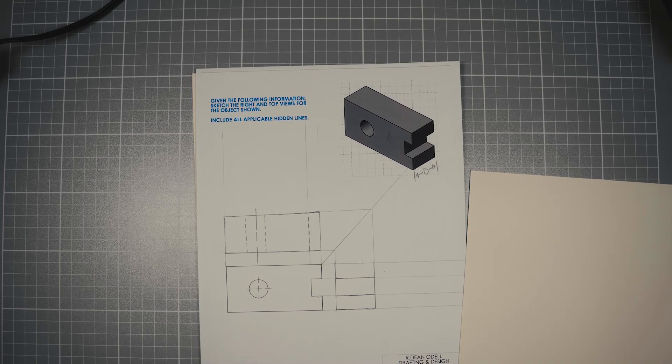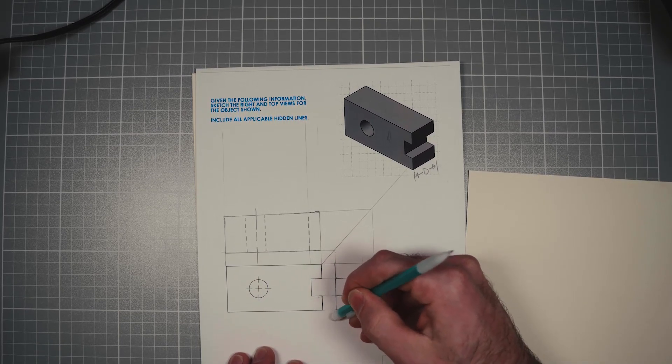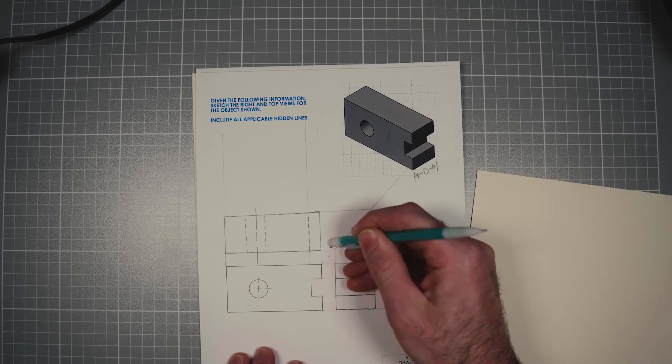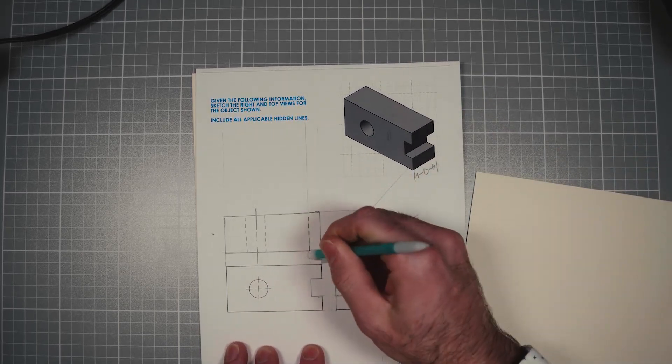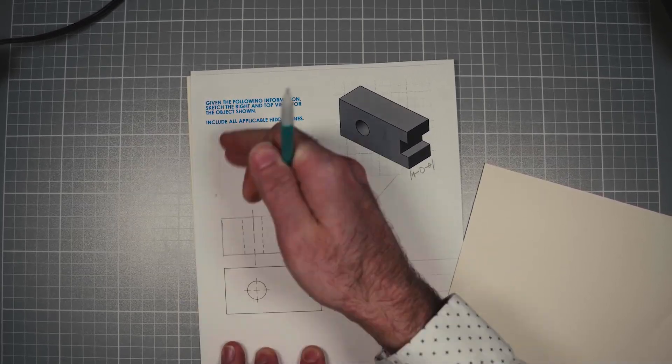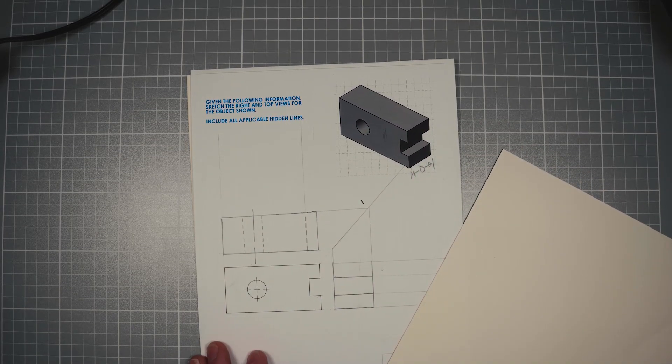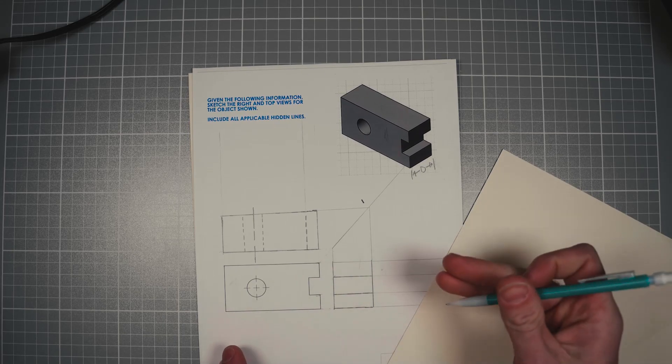Now, the views are done. All we got to do is go through and erase the projectors. Now, depending on what you're doing, you might not even have to do this if you just needed a nice sketch. Again, an eraser shield or other drafting tools is great for this, but if you don't have any, a regular pencil and index card or some card stock works fine.